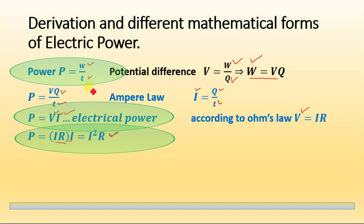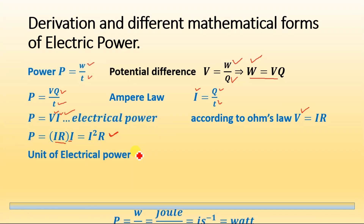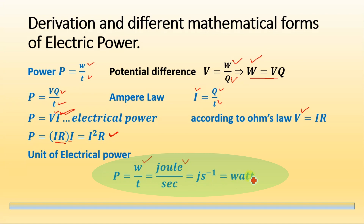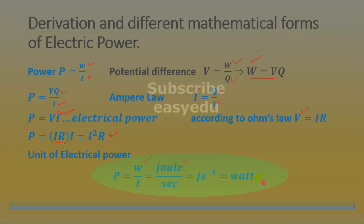The unit of electric power is the watt. Since P = W/T, and the unit of work done is joules and the unit of time is seconds, the unit of power equals joules per second, which is called the watt. If a potential difference of one volt causes a current of one ampere, then the power equals one watt. Other units of power include milliwatt and megawatt.